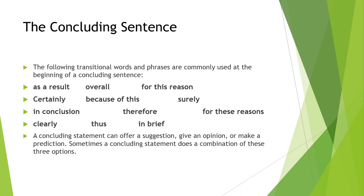Let's look at transitional words and phrases commonly used at the beginning of a concluding sentence: 'as a result,' 'overall,' 'for this reason,' 'certainly,' 'because of this,' 'surely,' 'in conclusion,' 'therefore,' 'for these reasons,' 'clearly,' 'thus,' 'in brief.' Please pay attention to these transitional words and phrases and use them at the beginning of the concluding sentence.